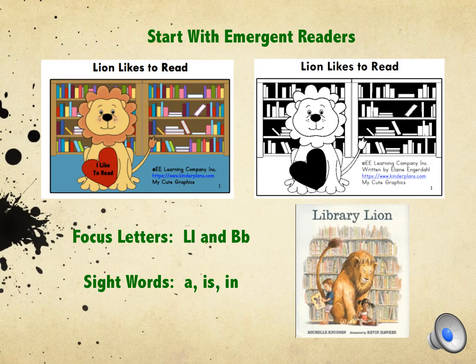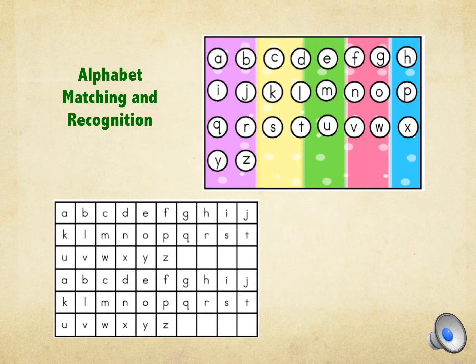All alphabet letters and their related sounds and sight words are introduced by using literature selections and follow-up emergent readers. In this specific unit, the letters L and B are introduced. The sight words 'a,' 'is,' and 'in' are also introduced. This unit is used at the beginning of the school year.